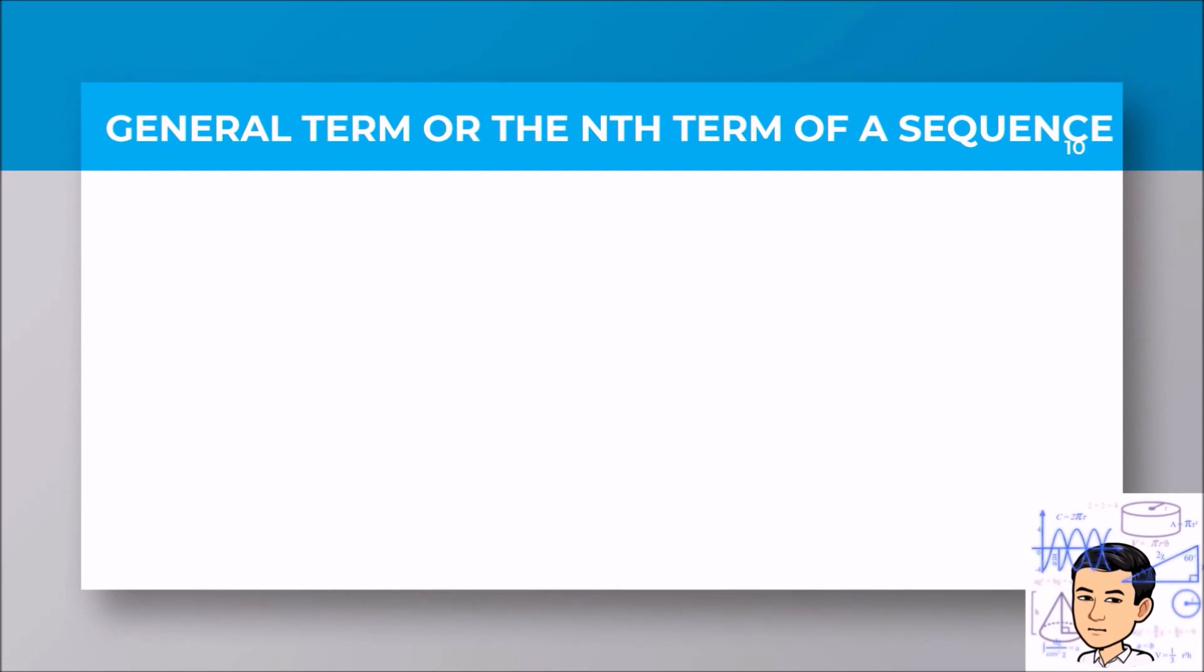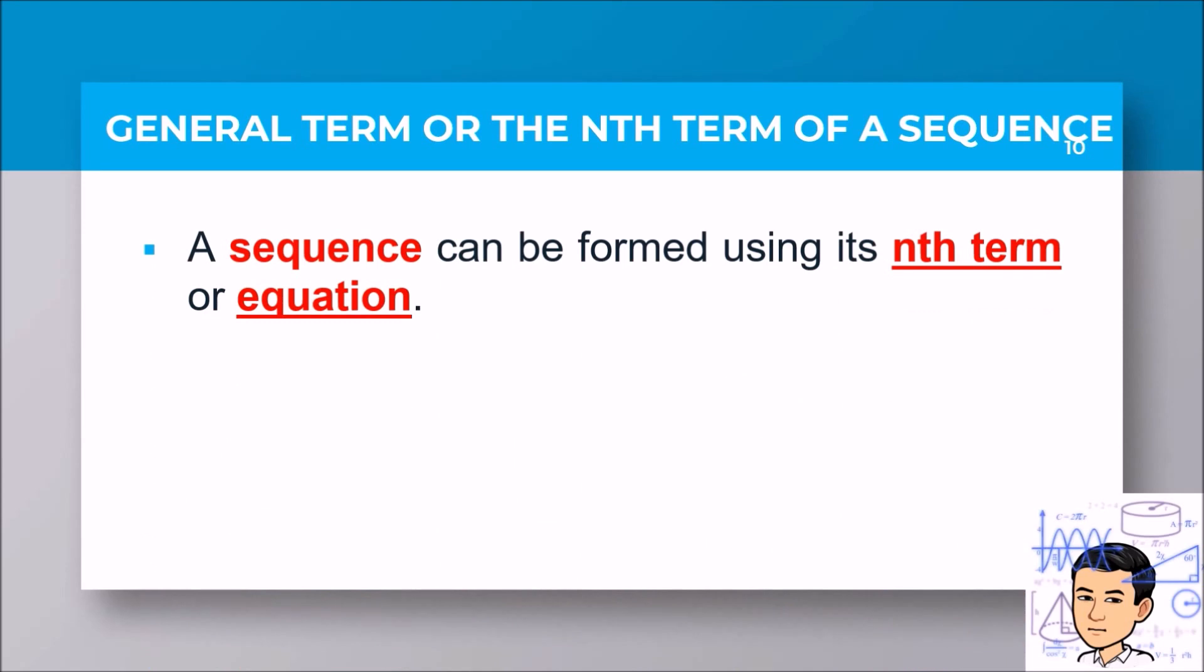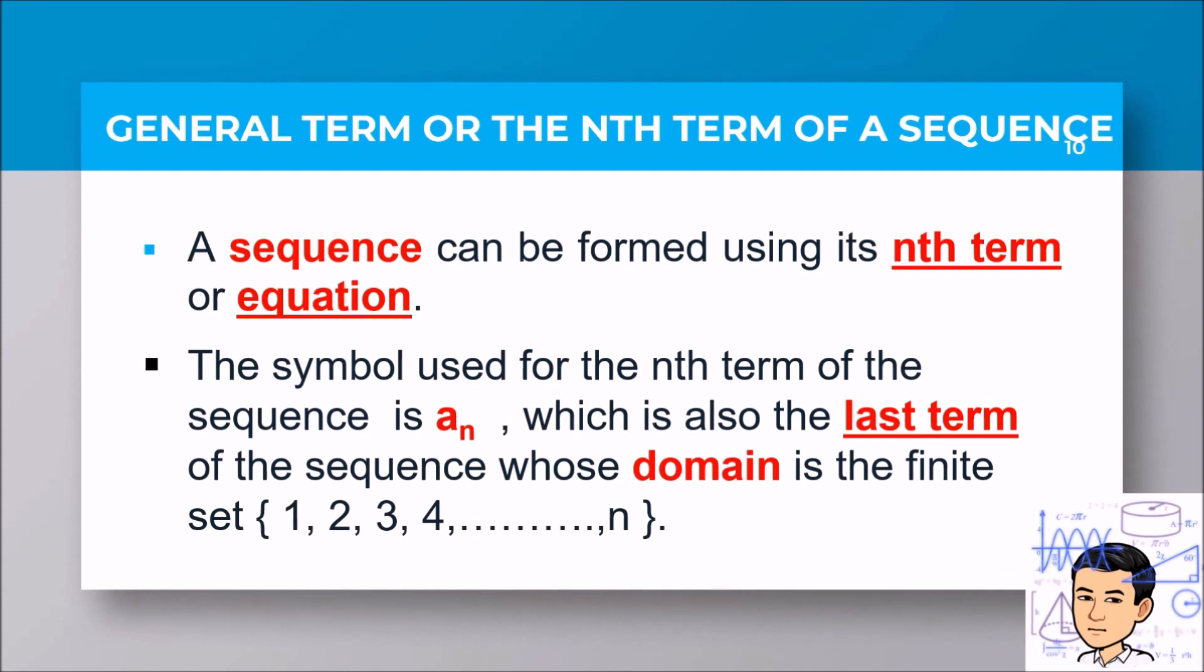A sequence can be formed using its nth term or equation. You've learned equations from physics, chemistry, linear equations, or quadratic equations in algebra. The symbol used for the nth term of the sequence is a sub n, which is also the last term of the sequence whose domain is the finite set {1, 2, 3, 4, ...}. The domain is substituted into the variable of the general term. From our example, you are going to apply the substitution process to form a sequence.